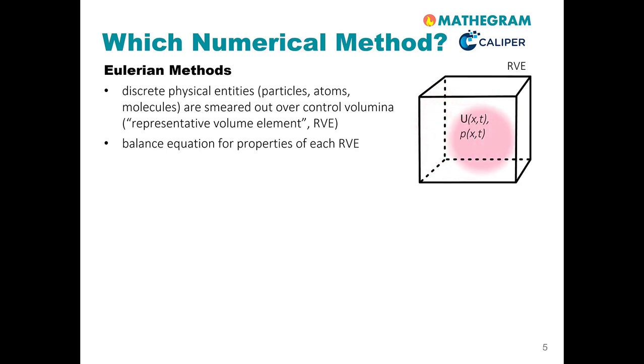X and T here indicate that these properties are a function of space and time. It is important to note that RVEs are spatially fixed. Only relatively slow motion or small deformation of RVEs is typically allowed. Eulerian methods are typically called computational fluid dynamics or CFD, the finite volume method, or the finite element method.